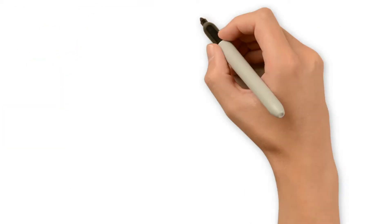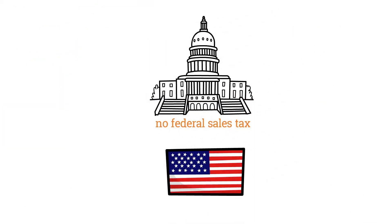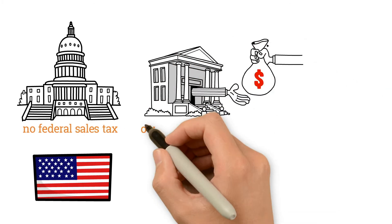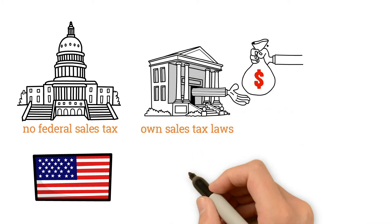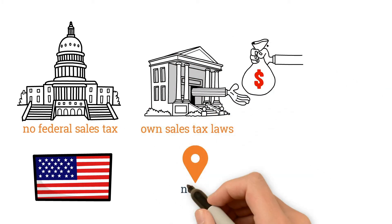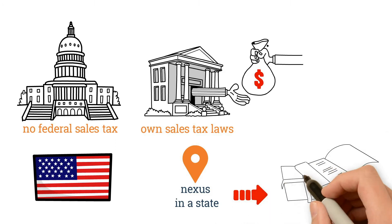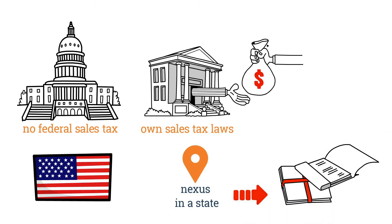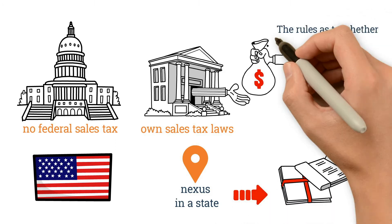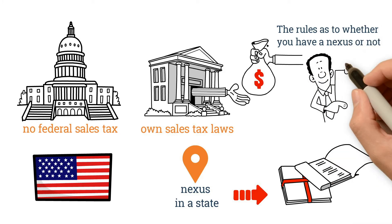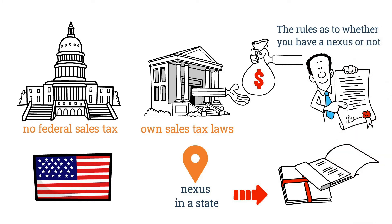Why? Well, it's because there's no federal sales tax in the United States. Instead, each state makes its own sales tax laws. And if you have a sales tax nexus in a state, you're required to register for a sales tax permit in that state. The rules as to whether you have a nexus or not, and the registration process, and how you file taxes varies from state to state.